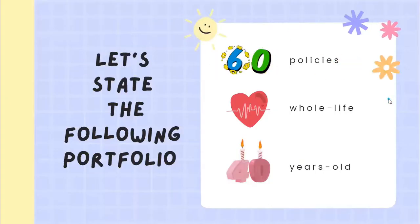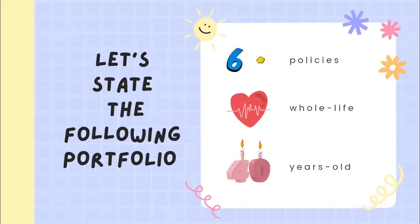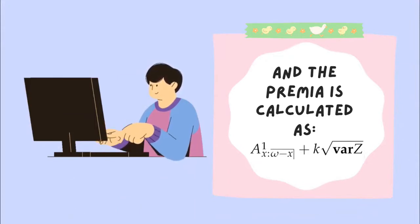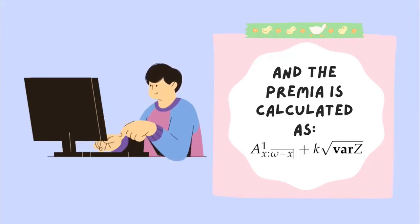Let's begin checking the next problem. You are given a portfolio with 60 whole life insurance contracts for 40-year-old people, assuming the company charges the insurance benefit of one payable at the end of year of death for the next omega minus x years for a person of age x, plus k times the square root of the variance of c as premia to each customer. We will use the inverse transform and Monte Carlo simulation techniques to find the least k such that the probability of ruin is less than five percent.